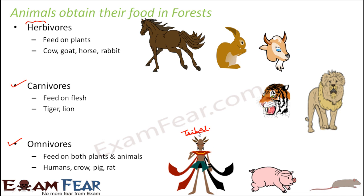Omnivores feed on both plants as well as animals. Depending on their food habits, all animals can get their food in the forest. Those who depend on plants can get plenty of food options because so many plants are present inside the forest. Those who depend on flesh can also get their food because a variety of animals are present inside the forest — for example, if a tiger wants to feed on a deer, deer are also present inside the forest. So food options are available for all animals inside a forest.